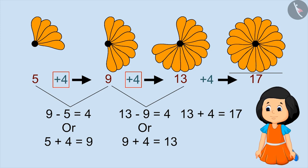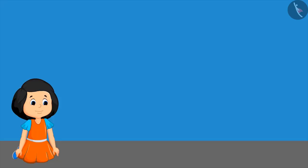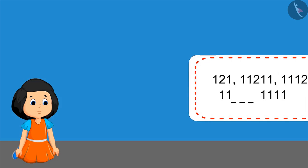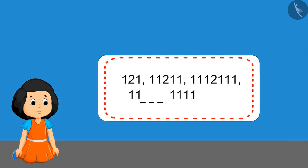Look, Muni has completed the flower. Now let's give Muni some number patterns. Let's check whether she can fill in the blanks properly or not. Here is the first pattern. Children, you can pause the video and find out the numbers. See, Muni has filled the blanks with these numbers. Is this answer correct?